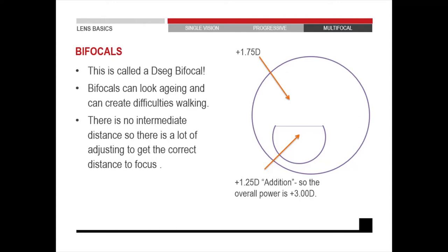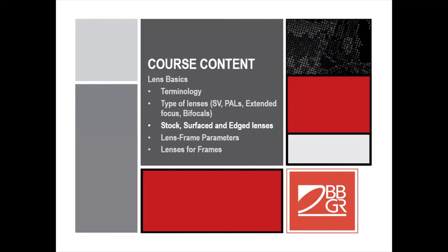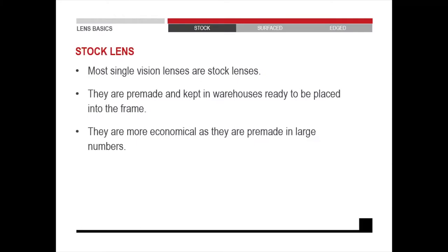Bifocals give you very clear distance and very clear near vision, but there is nothing focusing on the intermediate distance. That's why bifocals are not very comfortable for computer use when you need the intermediate visual zone. But you do have a very large distance area and a very large reading area, so it depends on what the patient wants. Most single vision lenses are stock lenses — plus and minus — pre-made and kept in warehouses ready to be placed into the frame. They are more economical as they are pre-made in large numbers.